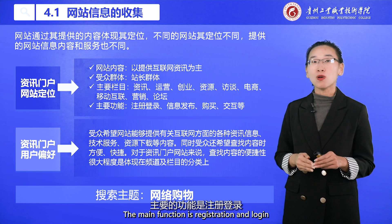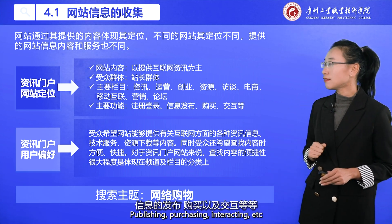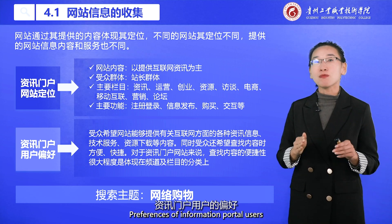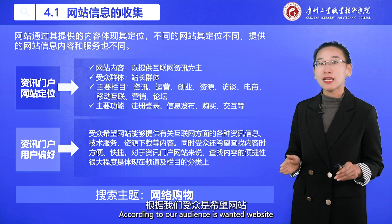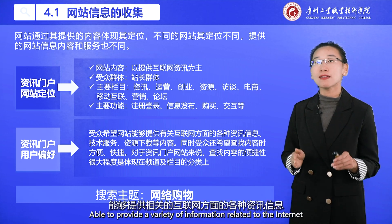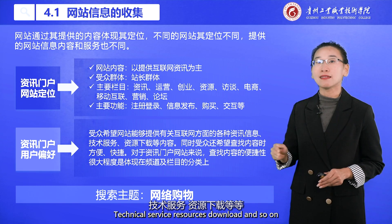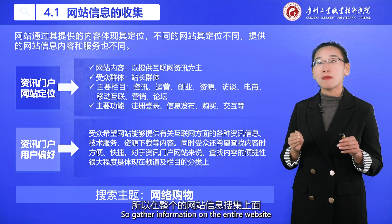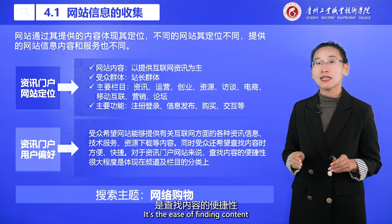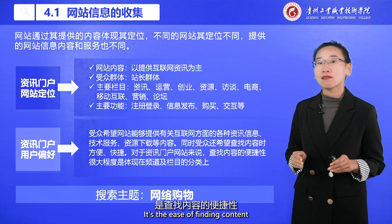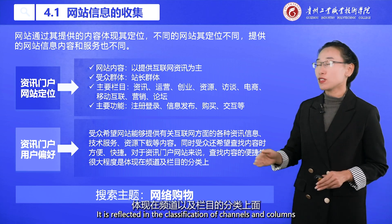The main functions of an information portal include registration and login, publishing, purchasing, interacting, and more. Regarding the preferences of information portal users, the audience wants the website to be able to provide a variety of information related to the internet, including technical service resources, downloads, and so on. For information portals, the ease of finding content is very important, and to a large extent it is reflected in the classification of channels and columns.